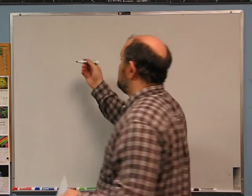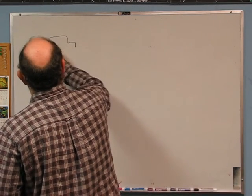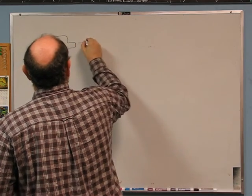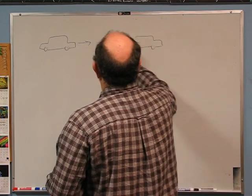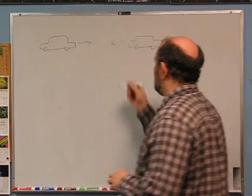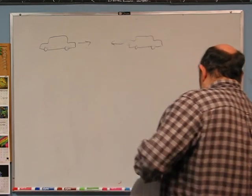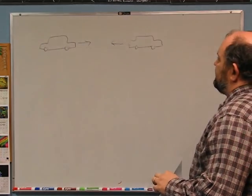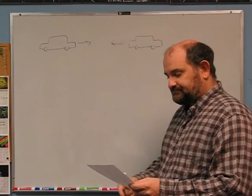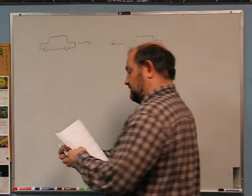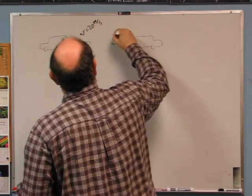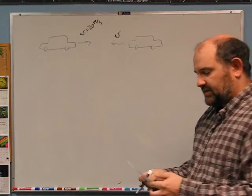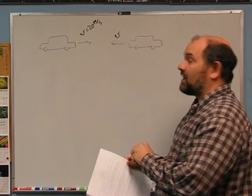First, two identical cars collide in a head-on collision. We have car one going one way and car two going the other. What I really mean by identical is that they have the same mass — that's what matters here. Both are initially moving with speed V equals 20 meters per second, which is also 45 miles per hour if you do the conversion.